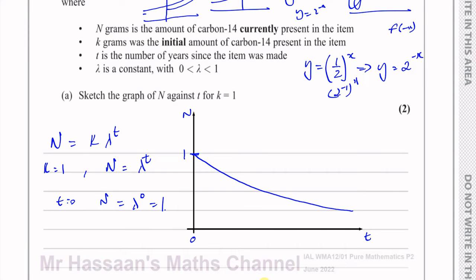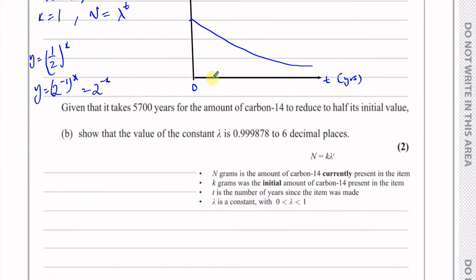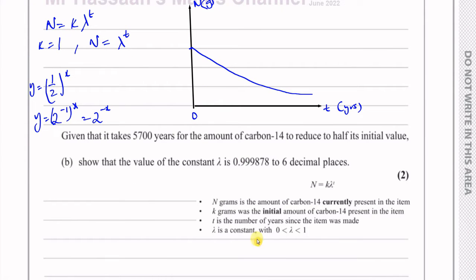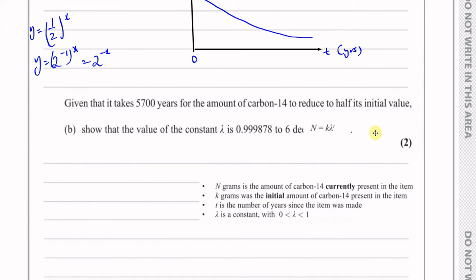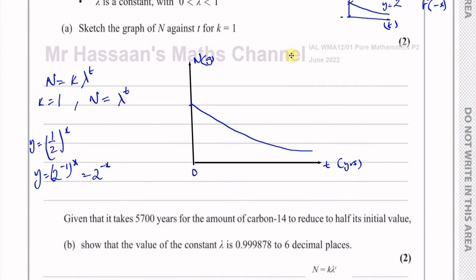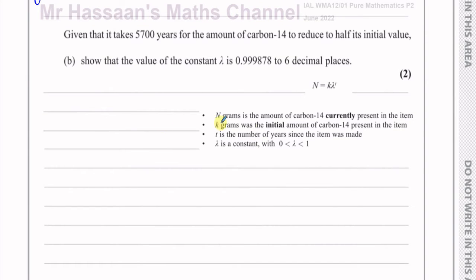Moving on to part B: given that it takes 5,700 years for the amount of carbon-14 to reduce to half its value, show that the value of the constant lambda is 0.999878 to 6 decimal places. We know n equals k times lambda to the power of t, and t here is 5,700 — the time it takes to reduce to half its value.